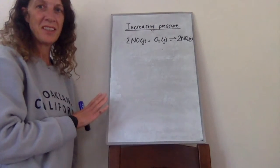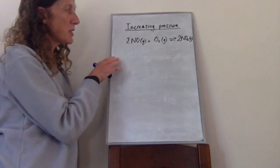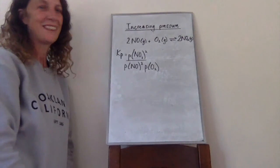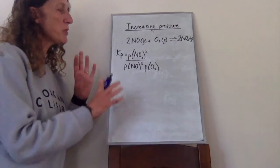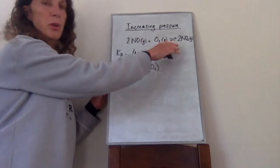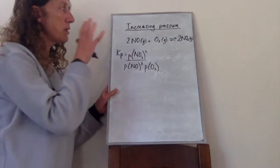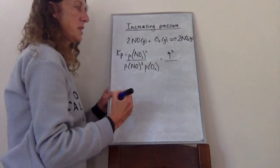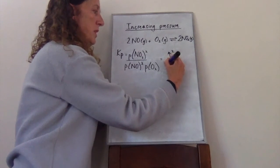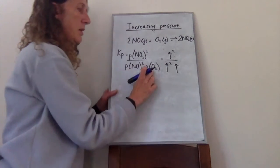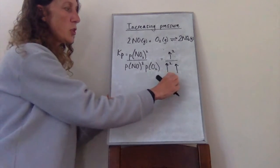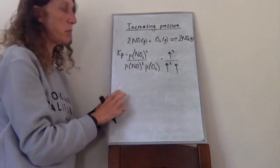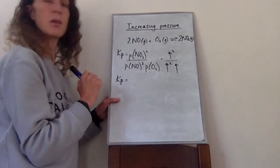Let's run through that again using a different example. If we put together the Kp expression for this second reaction and then increase the pressure of the whole system, each of the partial pressures will also increase. The numerator increases to the power of its stoichiometry, and the denominator also increases. In this case the denominator is increasing more than the numerator, so the overall value of Kp is going to go down.